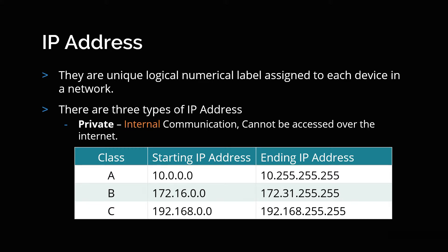Now there are three ranges of IP addresses in terms of private. The first range is 10.0.0.0 to 10.255.x.x. Another one is 172.16.x.x and the third range is 192.168.x.x. In the slide you will see this goes from 0 all the way up to 255.255. We will be talking about this in detail.